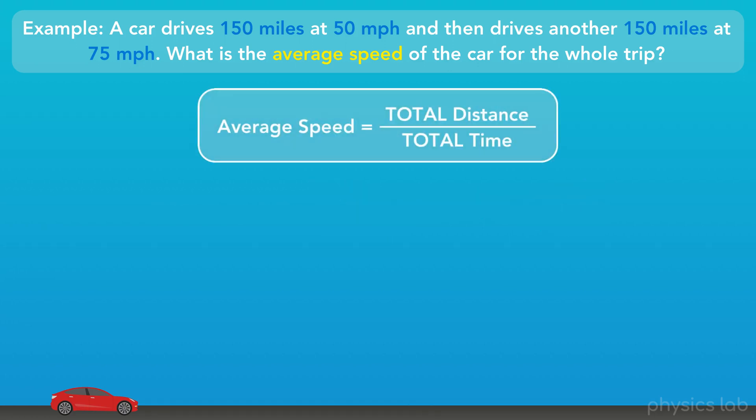Remember, this is how we define it. The average speed equals the total distance divided by the total time. We know the total distance. 150 miles plus 150 miles gives us 300 miles. But, we don't know the total time. How can we find it?